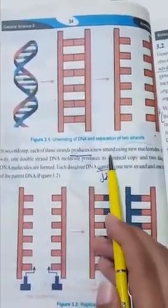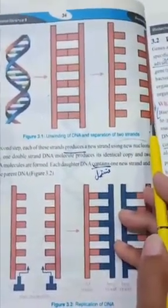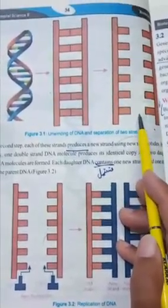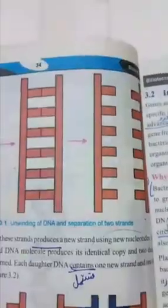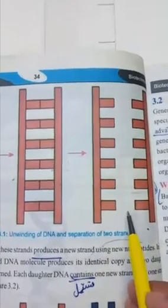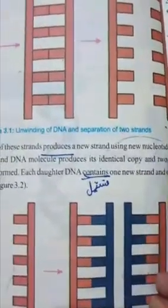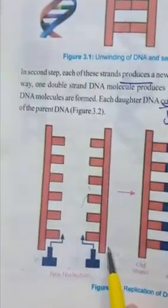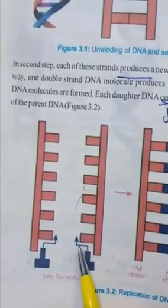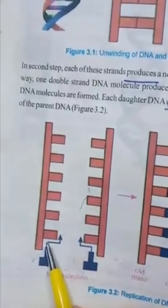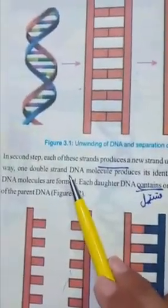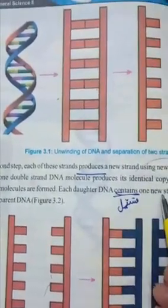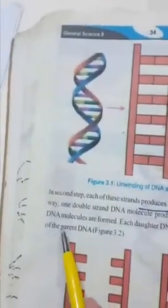In the second step, each of these strands produces a new strand. Right side wala strand apni left side copy banata hai, aur left side wala strand apni right side dubara bana leta hai. DNA ke strands new nucleotides use karte hain apni copies taiyar karne ke liye. In this way, one double-strand DNA molecule produces its identical copy, aur two daughter DNA molecules form ho jate hain.